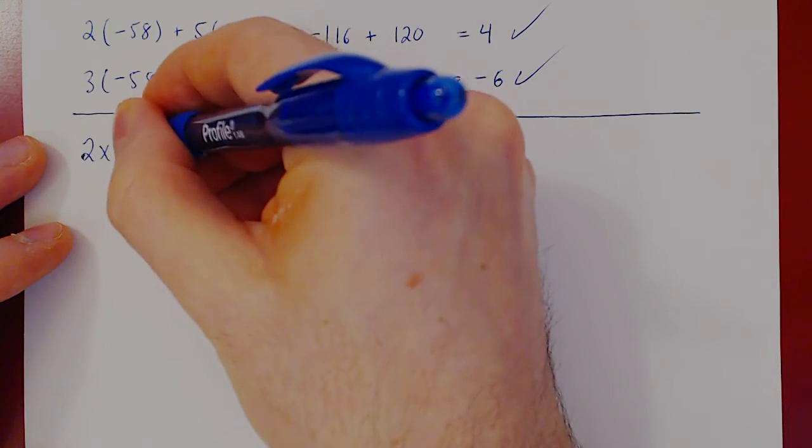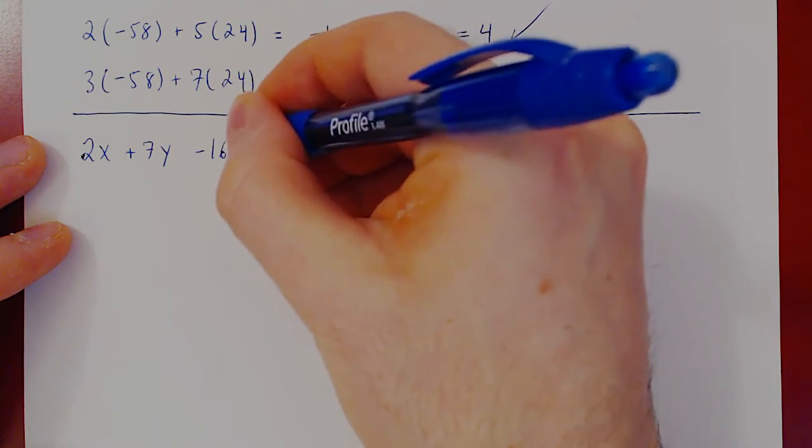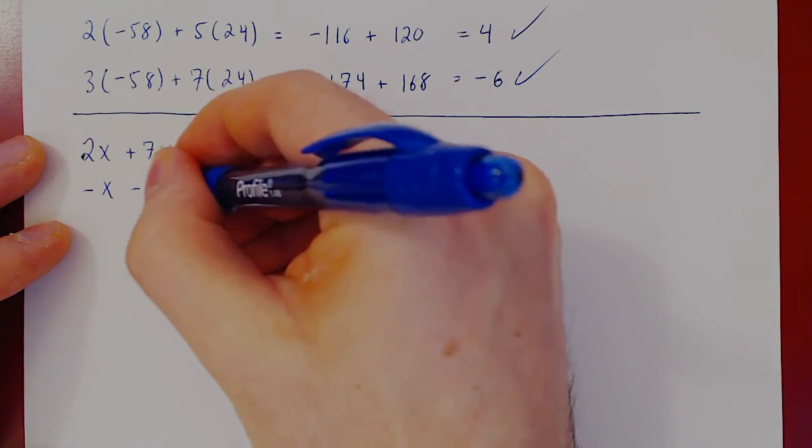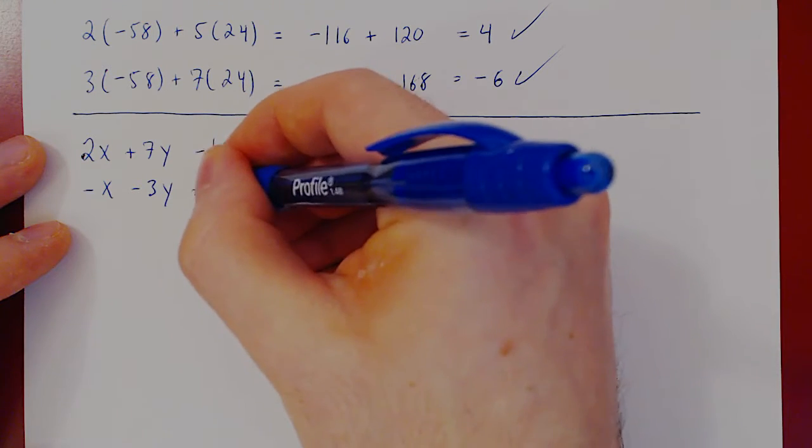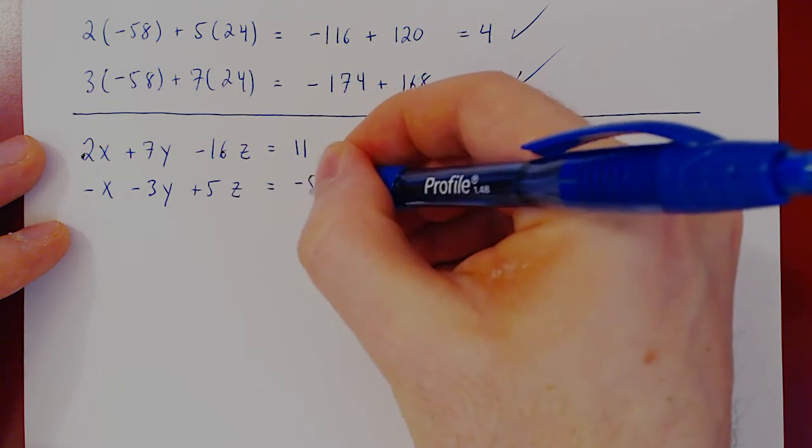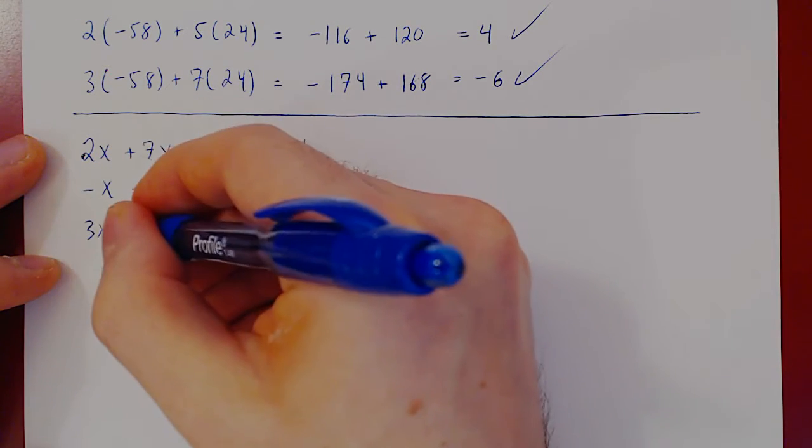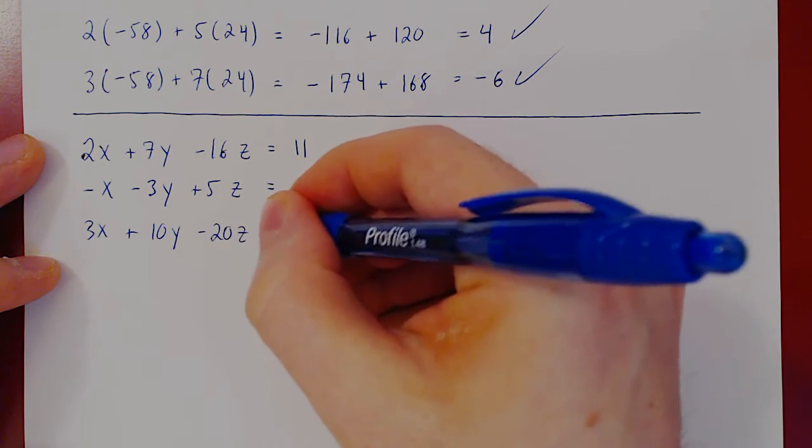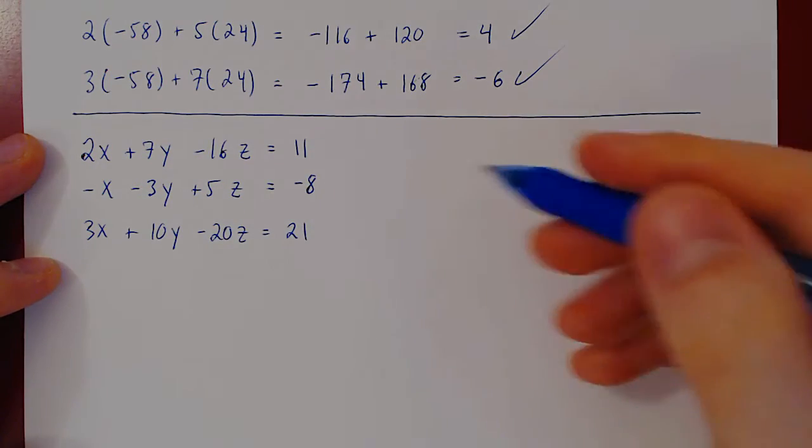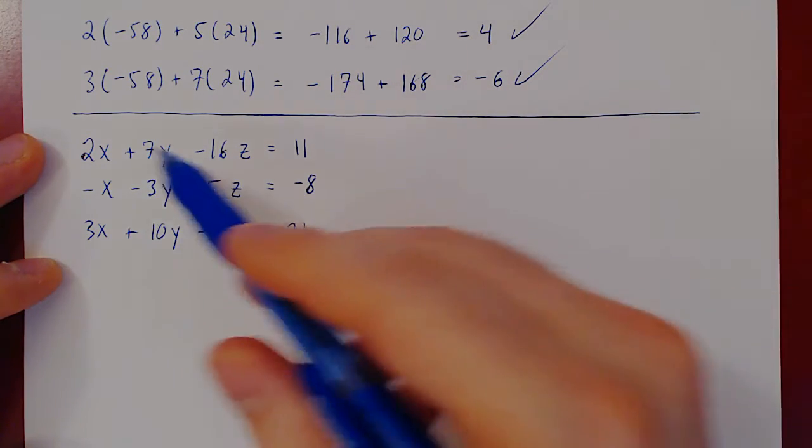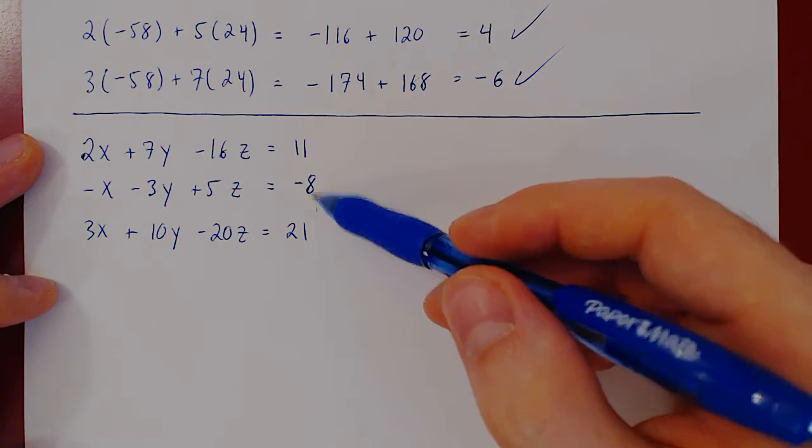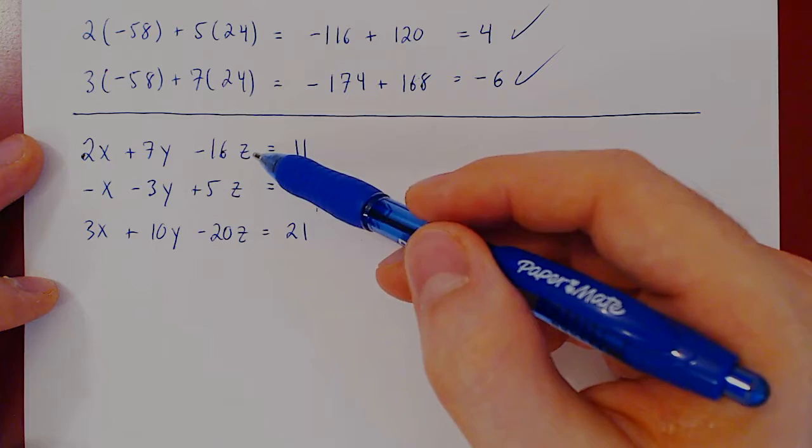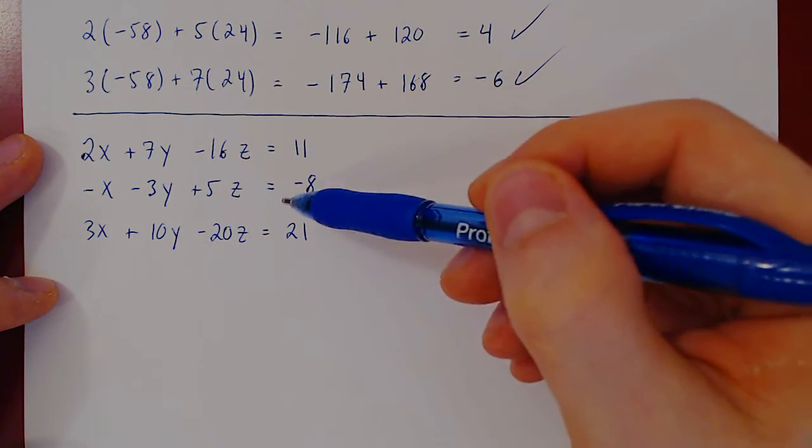So 2x plus 7y minus 16z equals 11. Negative x minus 3y plus 5z equals negative 8. And 3x plus 10y minus 20z equals 21. So now we have a linear system in three equations, three variables: x, y, z. So by asking to solve this linear system, we are asking to find all values of x, y, and z that will simultaneously satisfy these three equations.